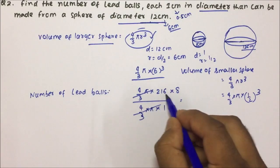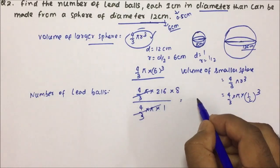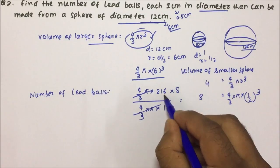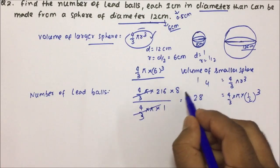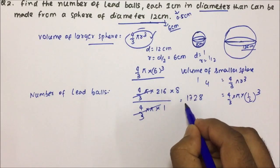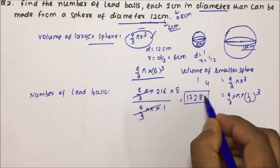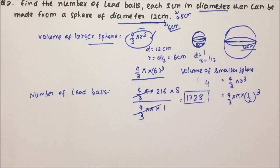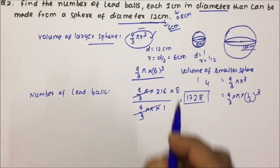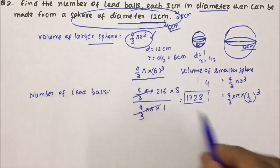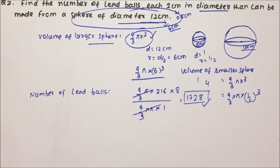So you can make 1728 lead balls each 1 centimeter in diameter from a sphere of diameter 12 centimeters. 1728 is the correct answer for question number 2, and I hope friends you would have understood both questions. Thanks a lot for watching the video. Thank you.